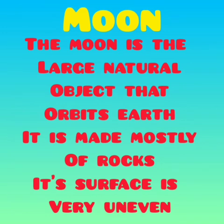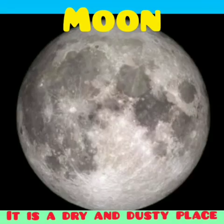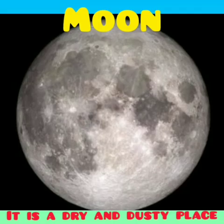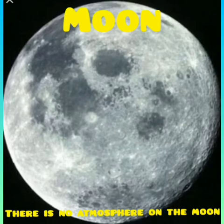The Moon is a large natural object that orbits Earth. The Moon is made mostly of rocks. Its surface is very uneven. It is a dry and dusty place covered with plains, mountains and craters. The Moon is about a quarter the size of Earth. Its diameter is about 3500 km.